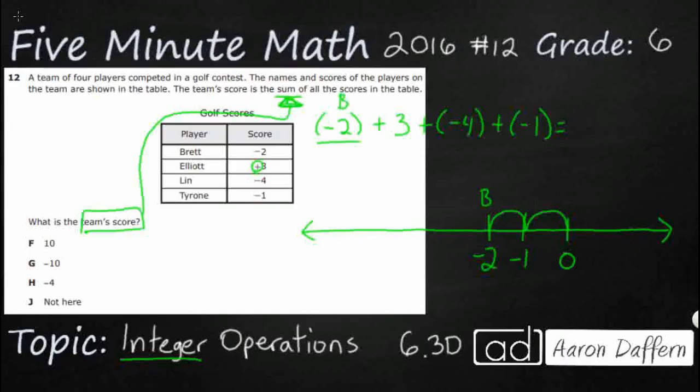Now we need to add 3. Remember whenever we add, we are going to the right. So we need to add 3, we're going to jump 1, 2, 3. So we are actually going to end up in the positive and that is with Elliott right here.